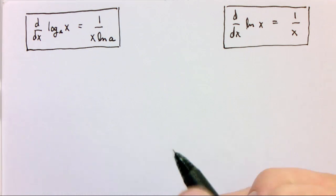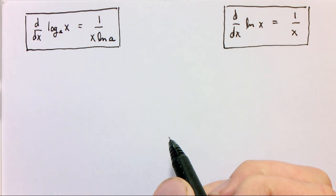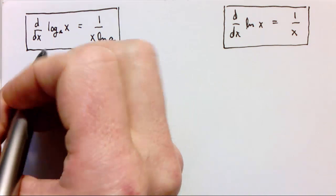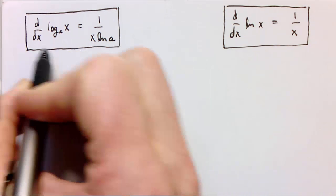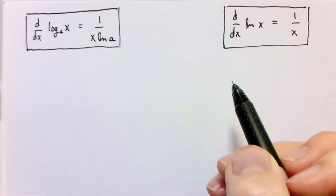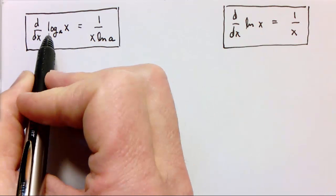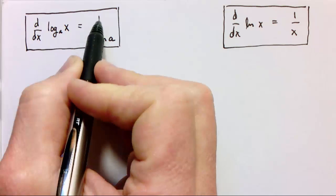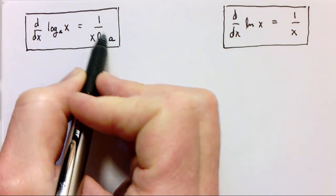First of all, how do we get the derivative of a logarithmic function? Here's a rule which in the end we're probably just going to end up memorizing: the derivative of log base a of x is 1 over x times the natural log of a.